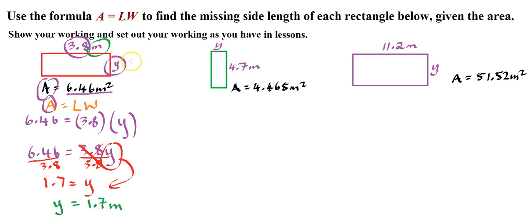So we now know that this, right, is 1.7 meters. So Y equals 1.7 meters. For the next one, again, let's start with the formula. Area equals length times width. And again, what we do is we plug in what we're given.